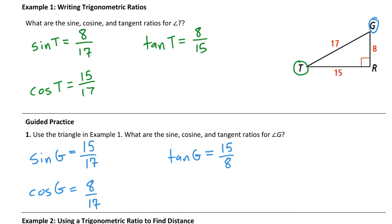The sine of G is the opposite leg over the hypotenuse. The leg opposite to G is 15, and the hypotenuse is always 17. Cosine of G is the adjacent leg over the hypotenuse — the adjacent leg to G is 8, so that's 8 over 17. Tangent of G is opposite side over adjacent side, so 15 over 8.